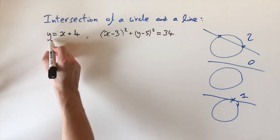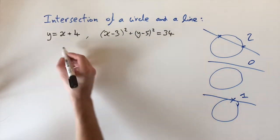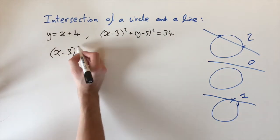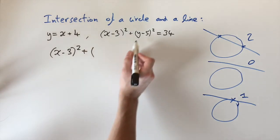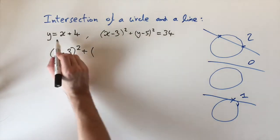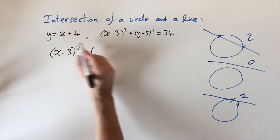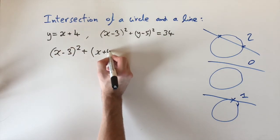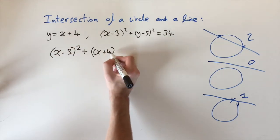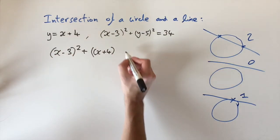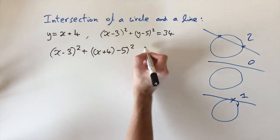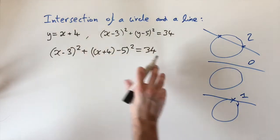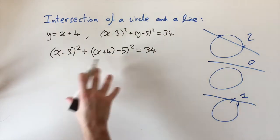So first, let's put y in here. If I just rewrite the equation of the circle: x minus 3, squared, plus — and now instead of y I'm just going to substitute this value — so x plus 4, that's the value of y, minus 5, squared, equals 34. And now we have an equation just in terms of x.